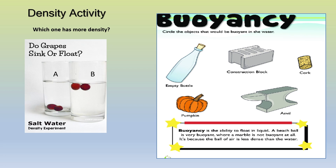Which one has more density? Do grapes sink or float? The grapes are placed in a jar with water and salt. Which one has more density — is it A or B? And your answer is correct: A. A is more dense than B.